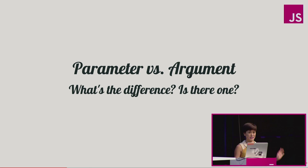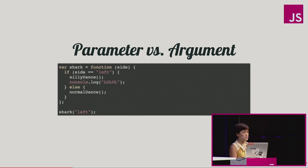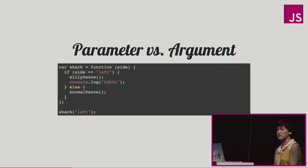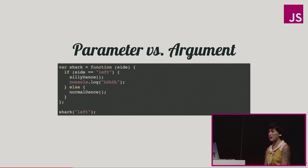All right, so first up is parameter versus argument. What's the difference? Is there one? So to find out, I went to Google. When I search 'parameter argument,' you'll see many people are wondering about the difference between the two, because you can see it's the third query down that's autofilled. So here I've written a function called shark, and I call shark at the very bottom with the string 'left.' How many people in the audience think that the parameter is, in that first line, 'side'? And how many people think it is the string 'left' in the bottom line of this code? And obviously I'm raising my hand both times, so you guys don't know.